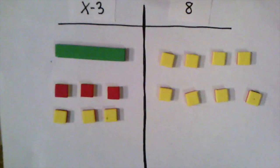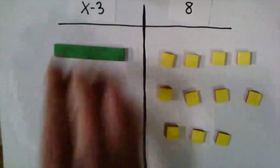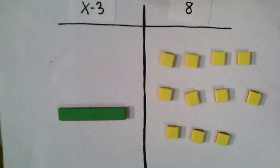The only thing is, now I have added three yellow tiles to the left side, which means I also need to add three yellow tiles to the right side. Now that I've done the same thing to both sides of the equation, I can clear out my zero pairs. And now I can see that x is equal to 11.